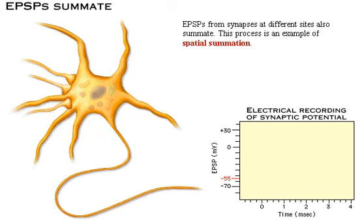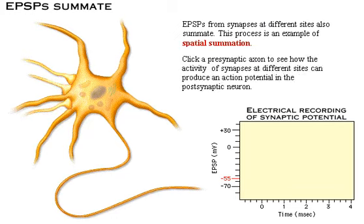Excitatory post-synaptic potentials from synapses at different sites also summate. This process is an example of spatial summation. Click a presynaptic axon to see how the activity of synapses at different sites can produce an action potential in the post-synaptic neuron.